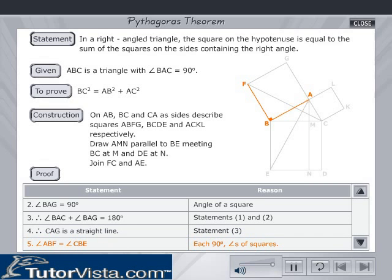Angle ABF = angle CBE, since they are angles of squares and hence each angle is equal to 90 degrees.